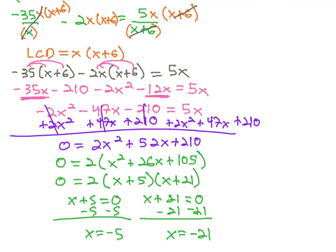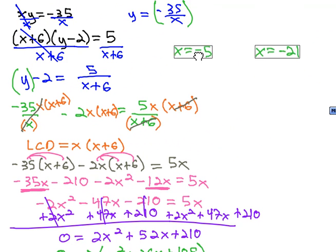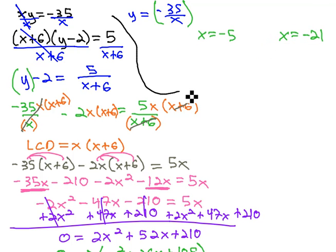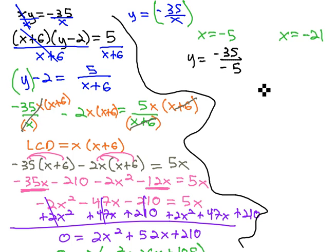We've got our two values for x. We just need to go back up to the beginning to figure out what values for y would work. We know y equals negative 35 over x. When x is negative 5, that simplifies down to 7. So as a point, when x is negative 5, y is 7.